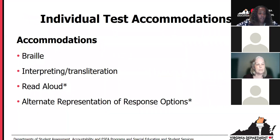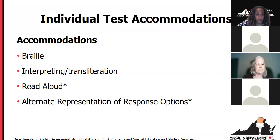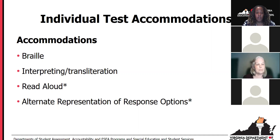The good news — you only have four individual test accommodations: Braille, for students in this population who use Braille; interpreting and transliteration; read aloud, which I'll spend a little time on; and alternate representation of response options, which I'll also discuss. These are the four that need to appear in the student's IEP for participation in the VAP if they are needed to meet the student's needs based on their disability.